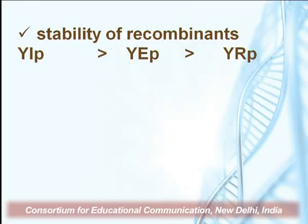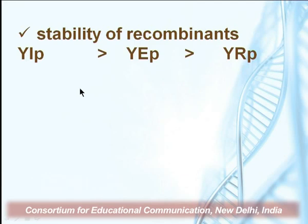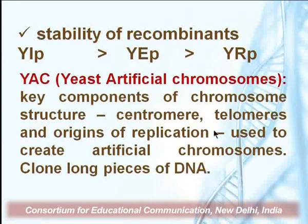The key factor for using YIPs is the stability of recombinants. For YIPs, the stability of recombinants is highest — because the plasmid integrates into the genome, there is less tendency for it to be lost over subsequent generations. However, in YEPs and YRPs, which remain as replicative plasmids, plasmid curation can occur, meaning the loss of plasmids over subsequent generations. If one needs stable recombinants, YIP is the preferred choice for cloning.